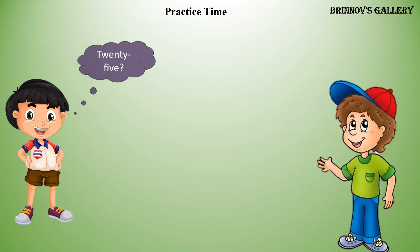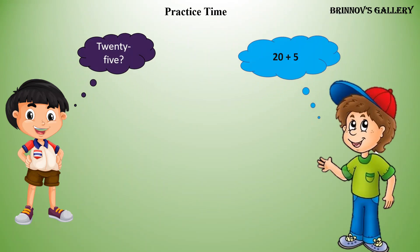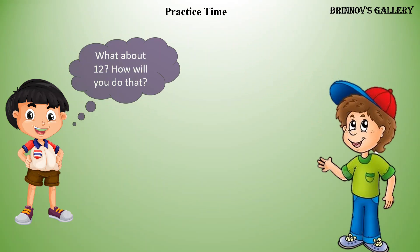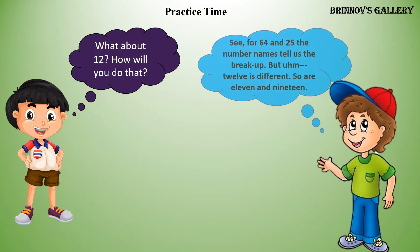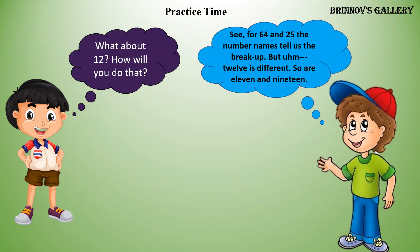25. 20 plus 5. What about 12? How will you do that? See, for 64 and 25 the number names tell us the breakup. But 12 is different, and so are 11 and 19.